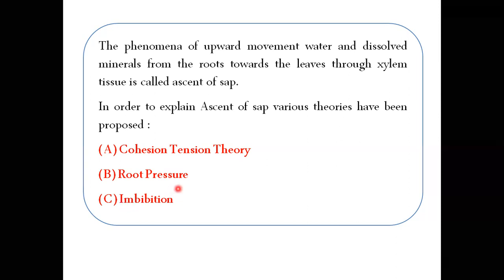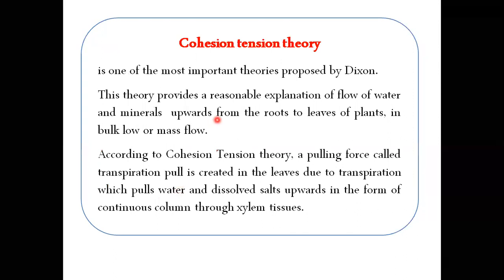Cohesion tension theory is one of the most important theories, proposed by Dixon. This is the most reasonable explanation of the flow of water and minerals upward from the roots to the leaves of the plants in bulk flow or mass flow. Water aur is mein maujood dissolved salts ka roots se leaves ki taraf xylem ke zariye move karna — cohesion tension theory is sabse behtar explanation hai.